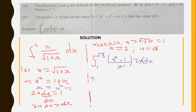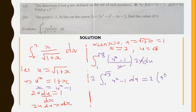After cancelling u with u in the denominator, this simplifies to 2∫₁^√3 (u² - 1) du. Integrating, we get 2 times [u³/3 - u] evaluated from 1 to √3.